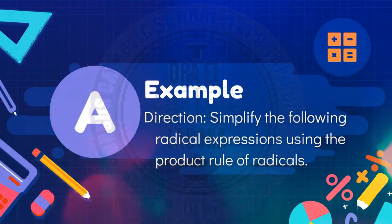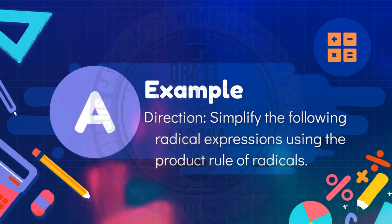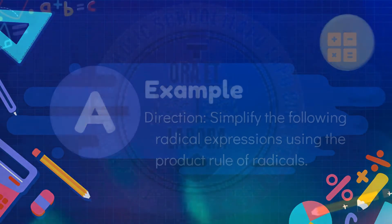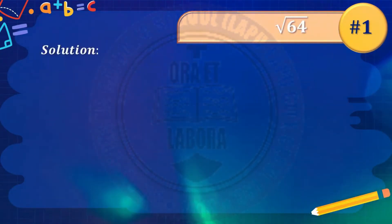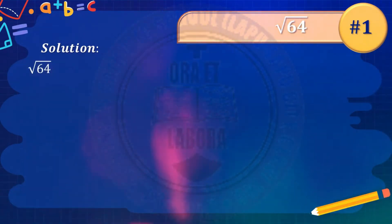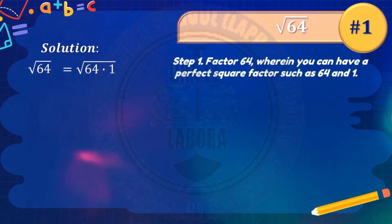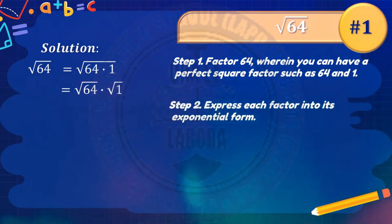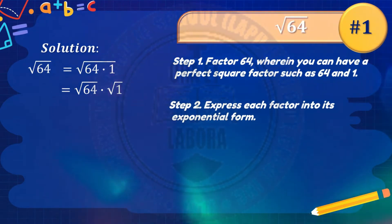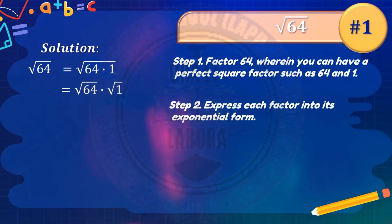Let's simplify the following radical expressions using the product rule of radicals. Number one: square root of 64. For our solution, we have square root of 64. We need to factor 64, wherein we can have a perfect square factor such as 64 and 1. So we'll have square root of 64 times square root of 1. Next, express each factor into its exponential form.